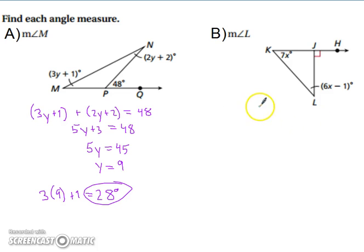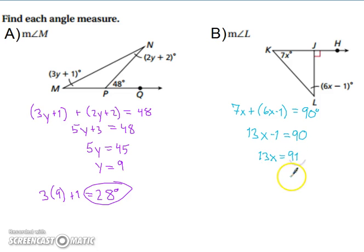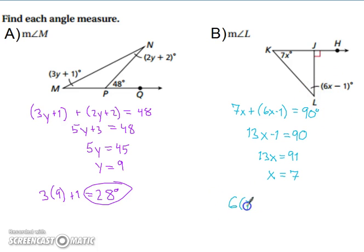For the next one, the two remote interior angles — 7X plus 6X minus 1 — equal the exterior angle of 90 degrees. Combining like terms: 13X minus 1 equals 90. Add 1 to both sides: 13X equals 91. Divide by 13: X equals 7. Substituting back in for angle L: 6 times 7 minus 1 gives us 41 degrees.